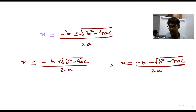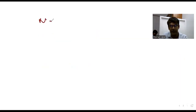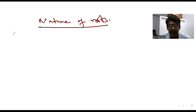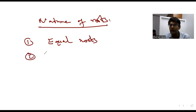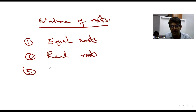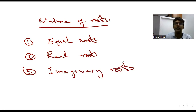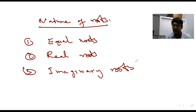अब बात करते हैं nature of roots की। Nature of roots का मतलब है कि root किस किसम का है। तीन किसम के हो सकते हैं — तीन possibilities हैं quadratic equation में। एक: equal roots। दूसरा: real roots। तीसरा: imaginary roots। Equal roots का मतलब — जो x की दो values मिली हैं वो same हों, उसको हम equal roots या same roots कहेंगे।